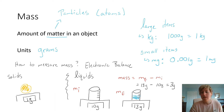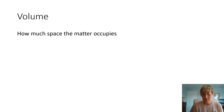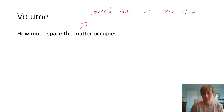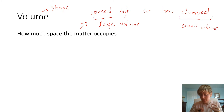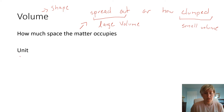Next, we're going to talk about volume — how much space the matter occupies. If my item is spread out, it has a large volume; if it is clumped together, it has a small volume. We're really talking about the size and shape of the space it takes up. For solids, the unit is centimeters cubed.